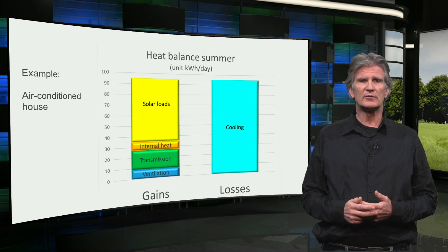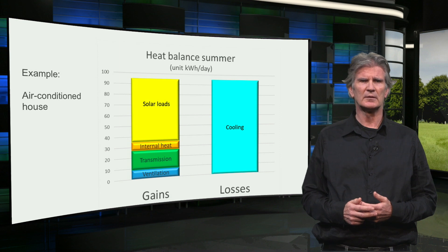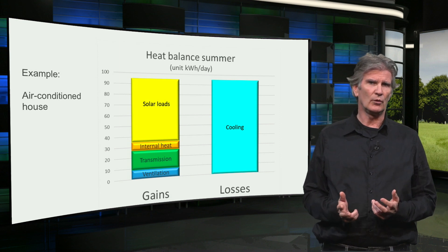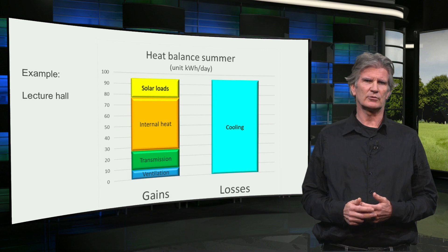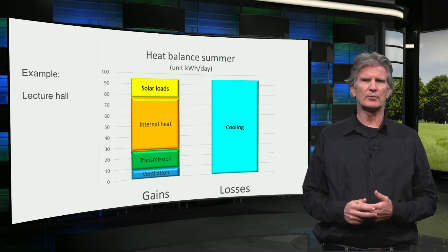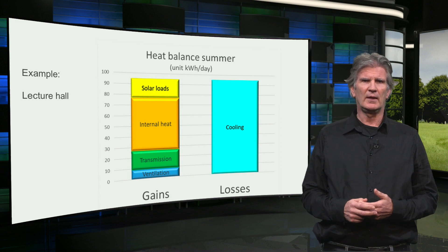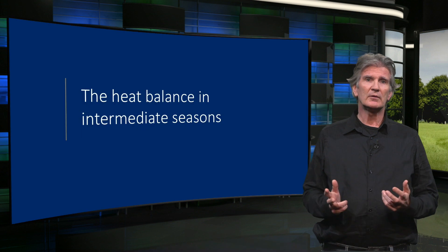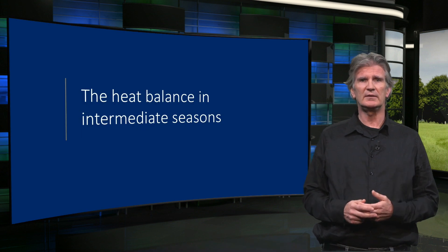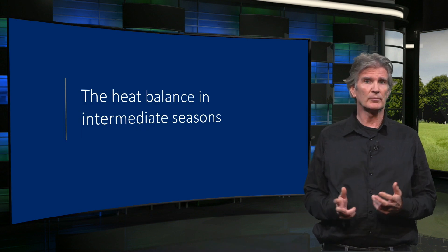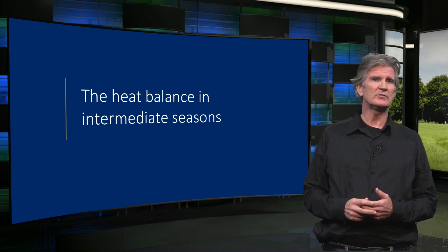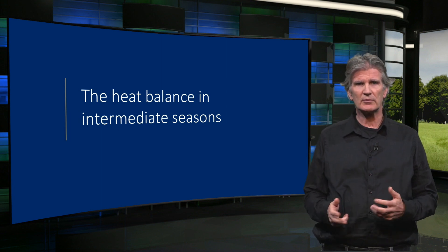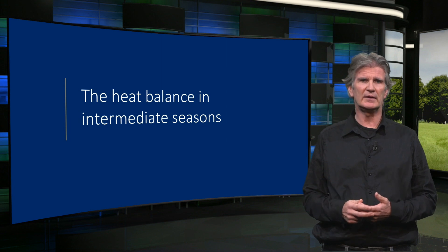This is an example for the heat balance on a hot summer's day in an air-conditioned building. In this case the internal heat loads are quite low and the solar gains are predominant. But for instance in a lecture hall, the internal heat load by people is the largest heat source. From the point of view of zero energy design, the intermediate seasons — spring and autumn — are even more interesting, because in these seasons you can achieve a comfortable climate without any energy demand for heating and cooling.